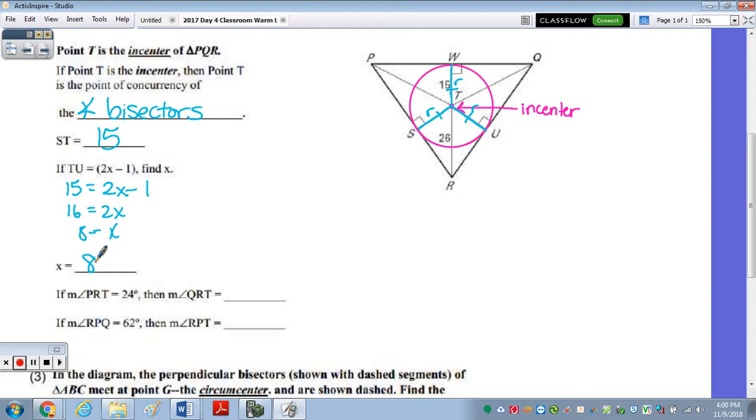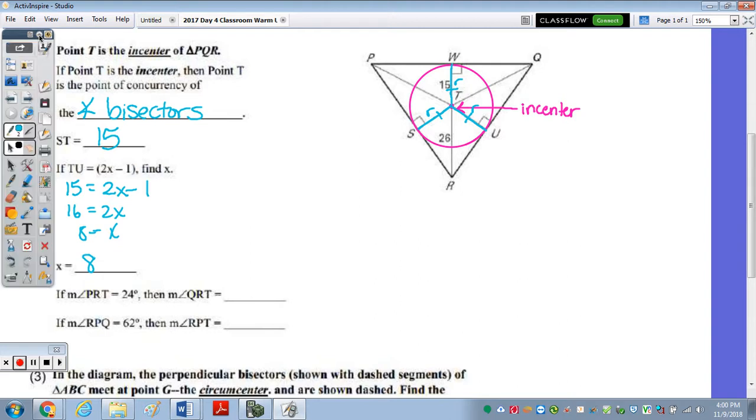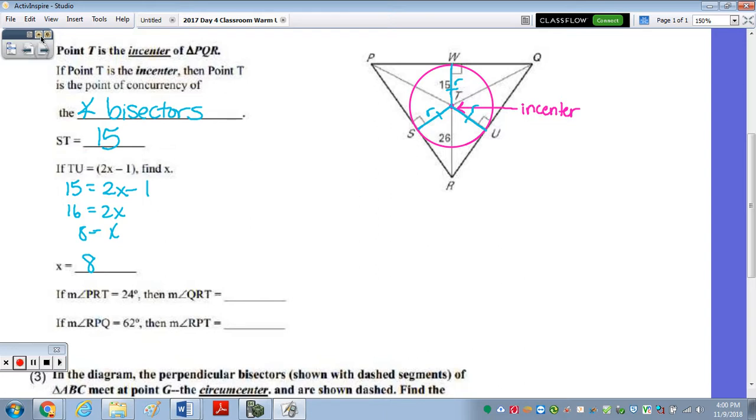Now going back to the angle bisector part of that question. So that had to do with the segments formed or the incenter being equidistant from the sides of the triangle. Now the angle bisector part. So the measure of angle PRT, so tracing it, PRT, this angle right here is 24.